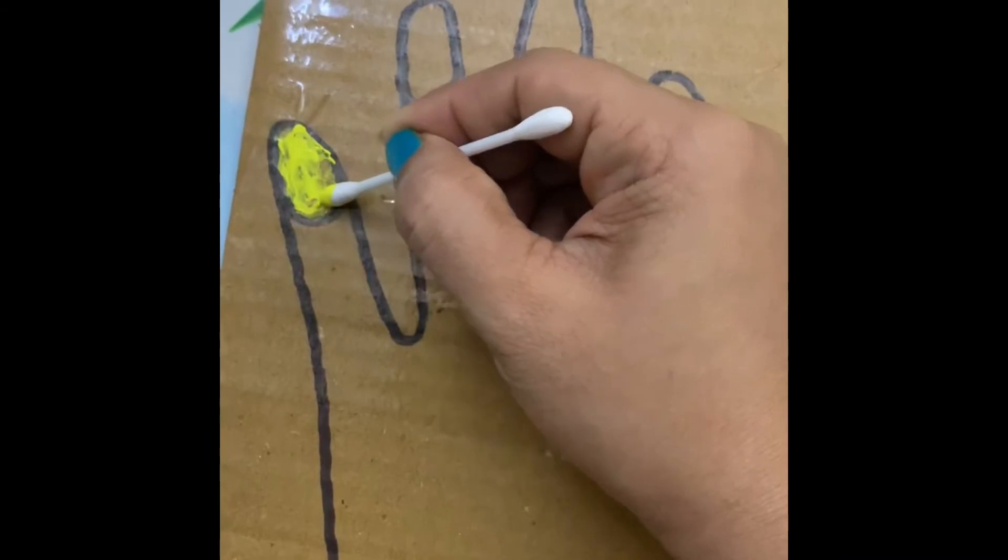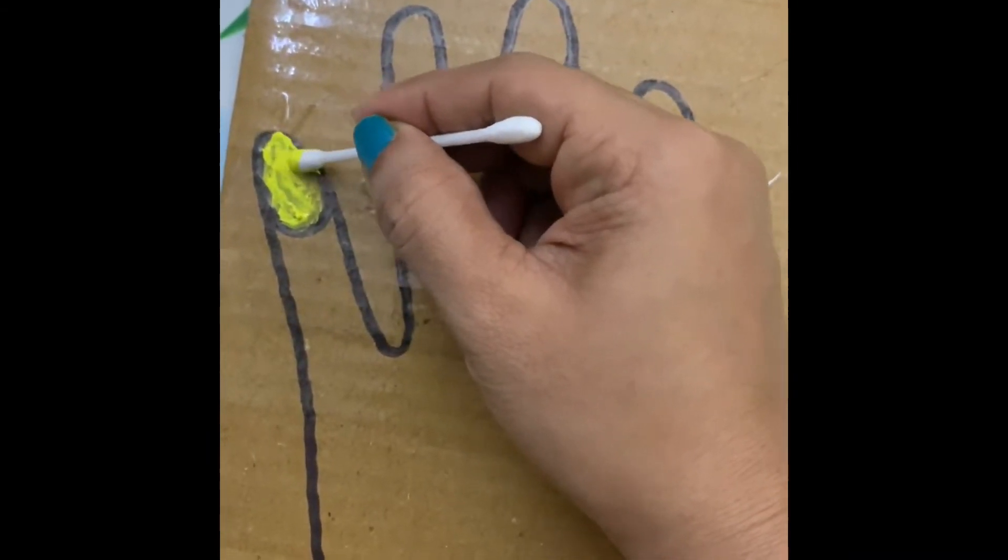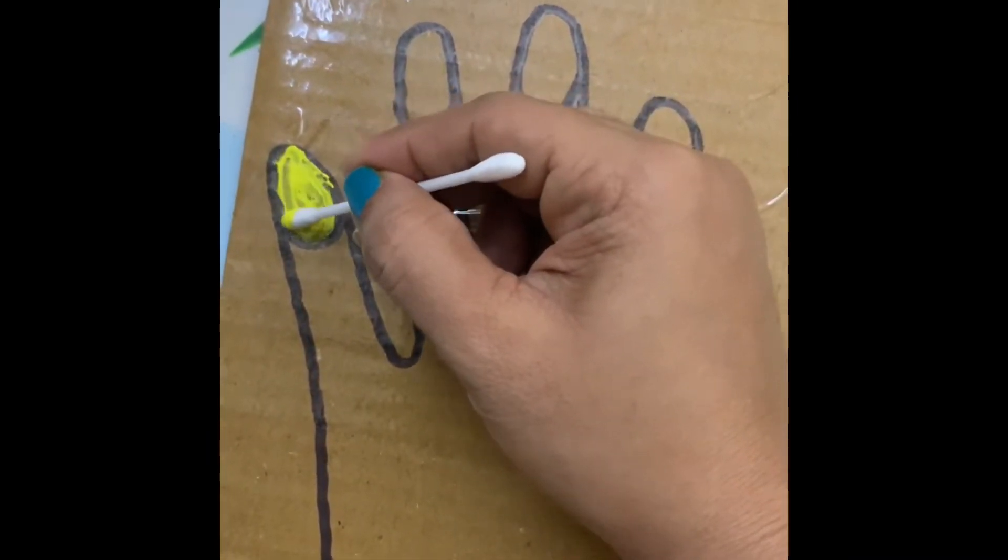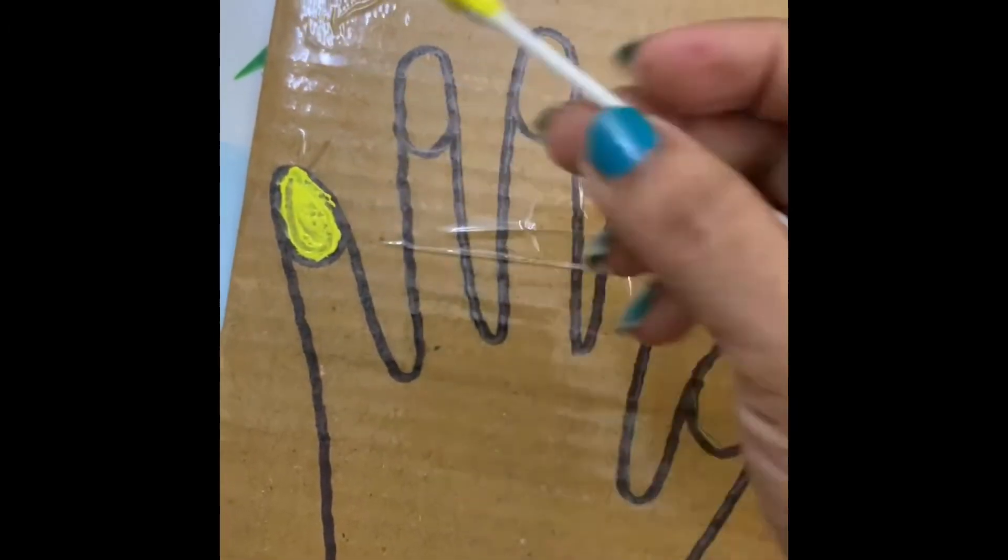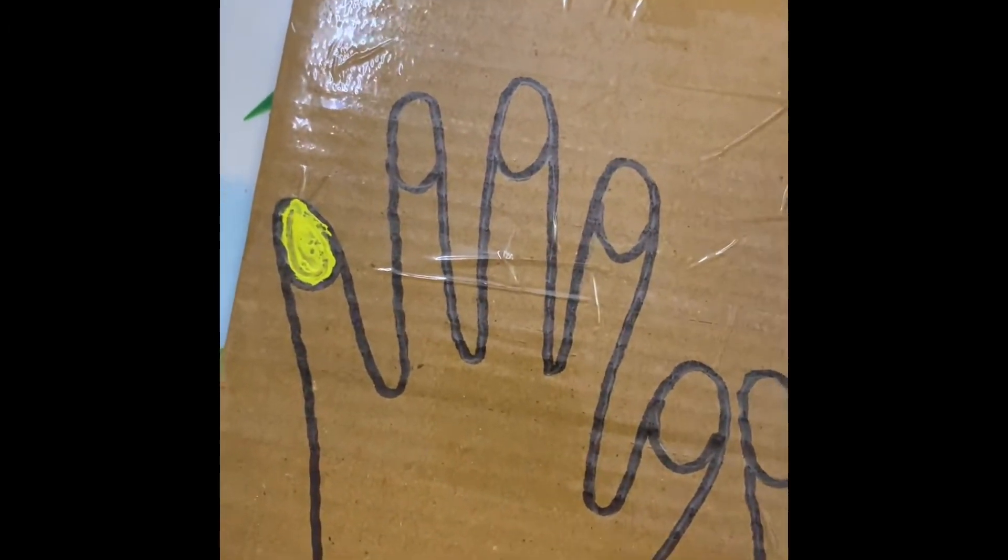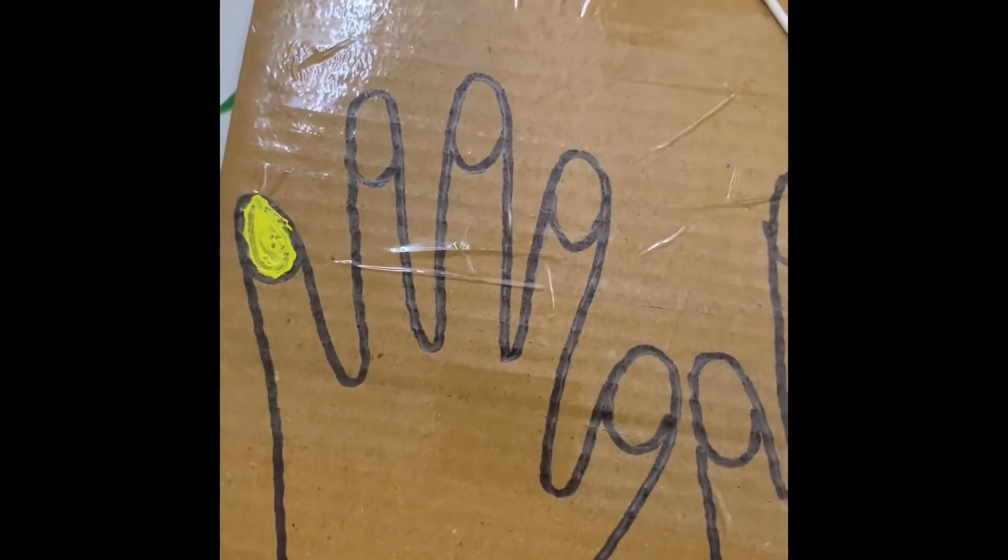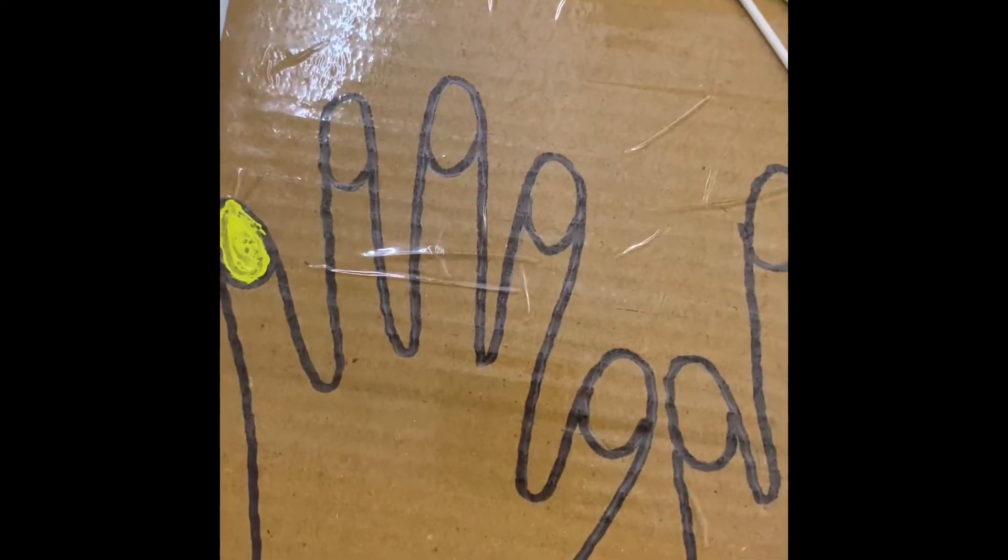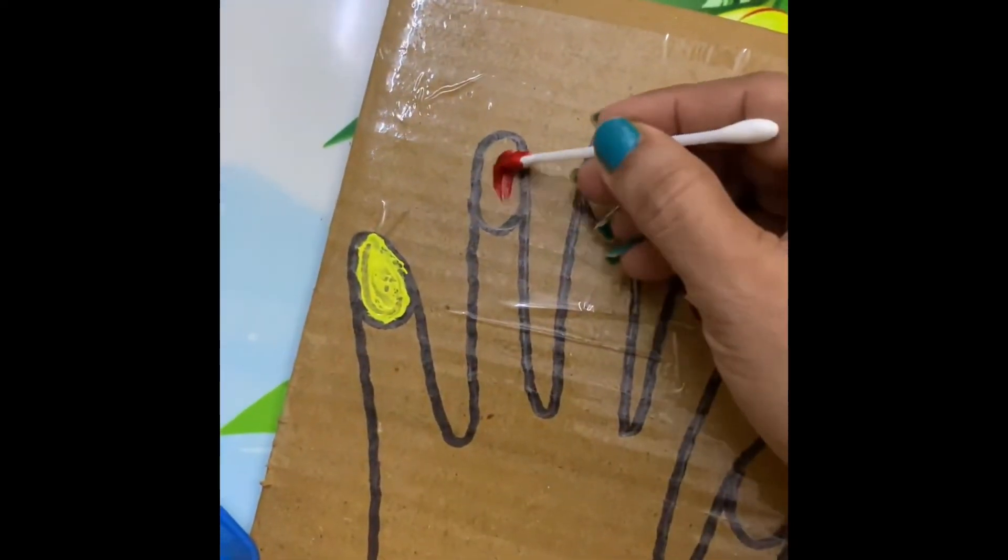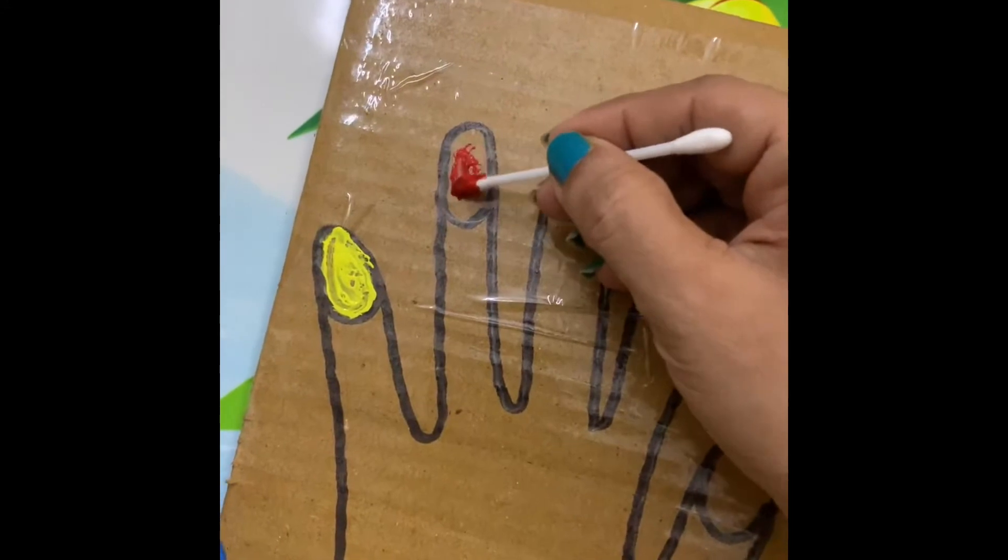You have to color inside the nail, okay, with the help of a bud, ear bud, or you can use brush as well. See red, now I want to use red color. Mama can say that you have to paint red, so see I am using red paint.